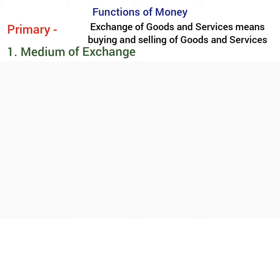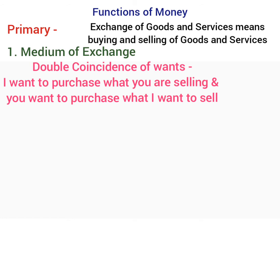Double coincidence of wants means a transaction can happen only when I want to purchase what you are selling and you want to purchase what I want to sell. Money, being a standard medium of exchange, overcomes this problem. Exchange becomes easier as it doesn't require double coincidence of wants, i.e., simultaneous sale and purchase. The size of the market of every product and service has increased due to this function of money.